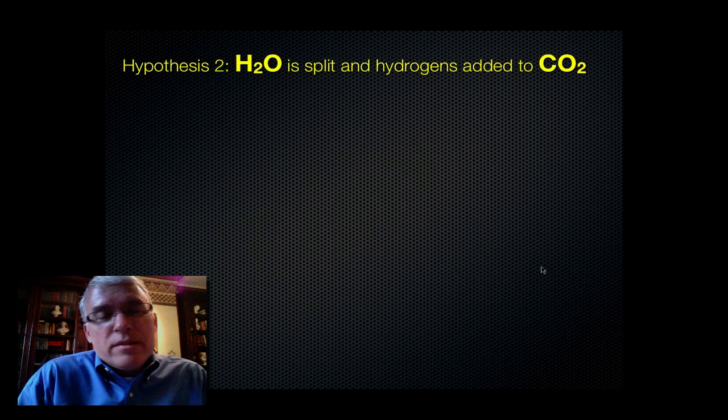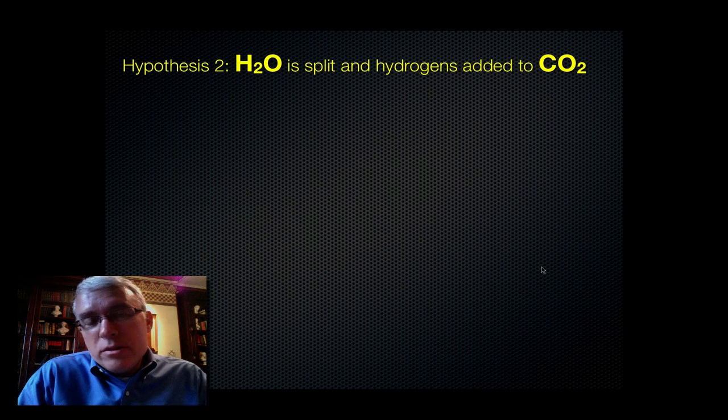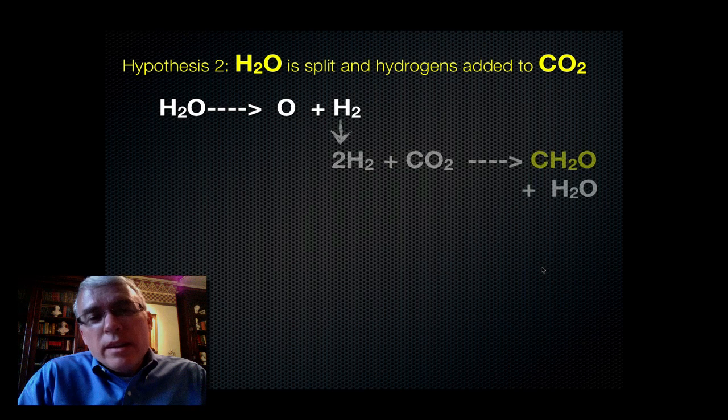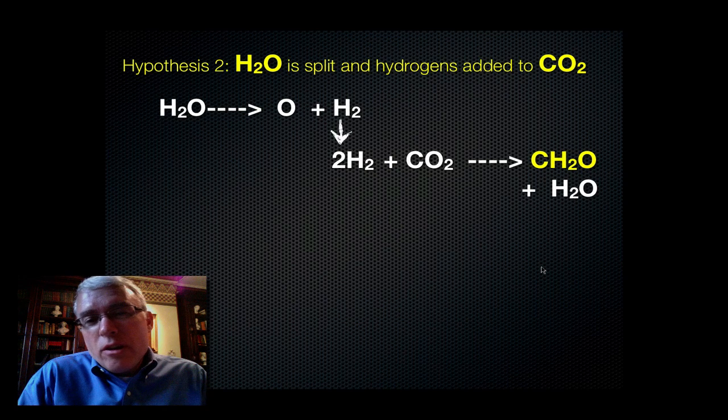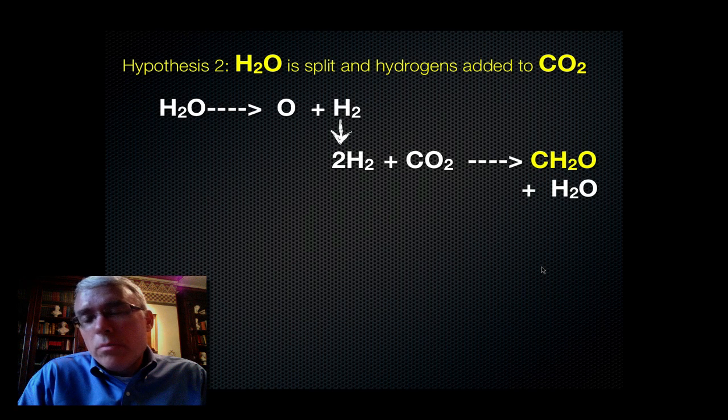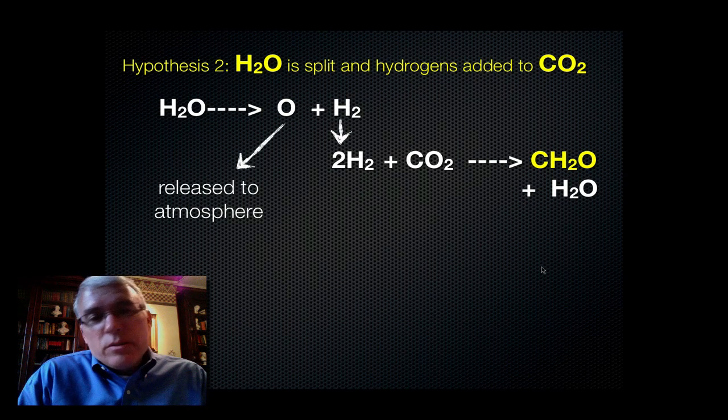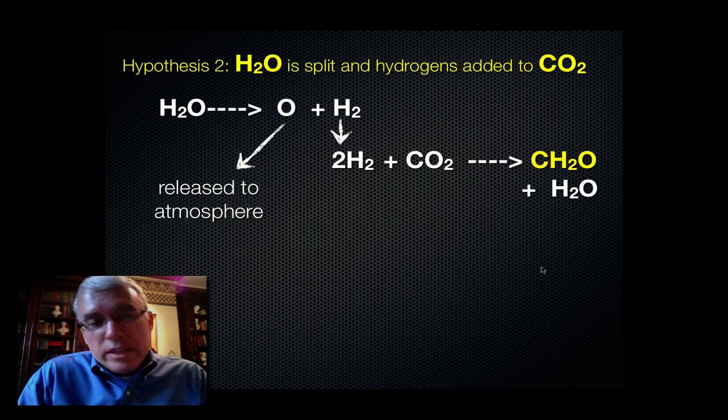The second hypothesis is that you're going to split the water molecule to get the oxygens and the hydrogens away from each other. So we're going to break H2O into an oxygen atom and two hydrogens, and then we're going to add those two hydrogens to carbon dioxide to give us our carbohydrate molecule plus some water to make it all balance out.